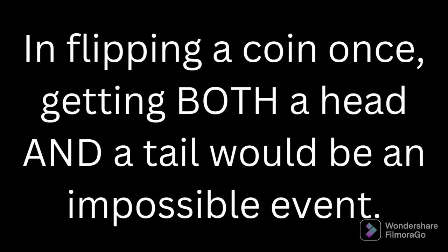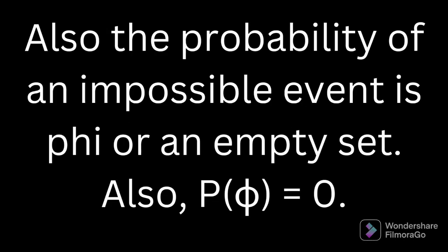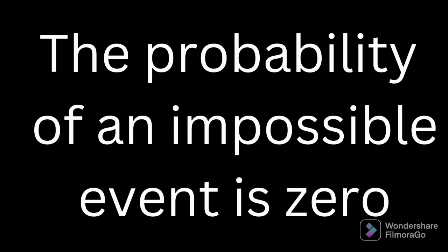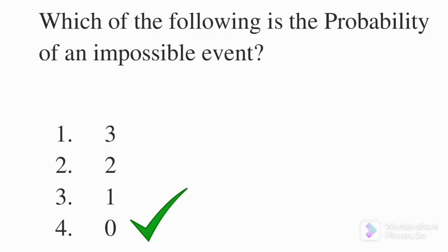Similarly in flipping a coin once we can get either head or tail. But getting both a head and a tail simultaneously would be an impossible event. Also the probability of an impossible event is phi or an empty set. Also, P(φ) = 0. Therefore the probability of an impossible event is 0. Hence 4th option 0 is the correct answer.